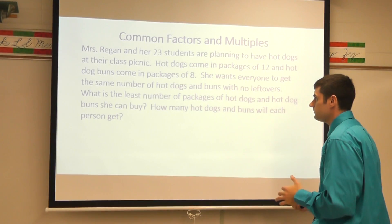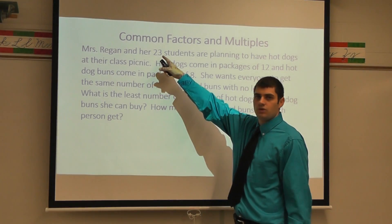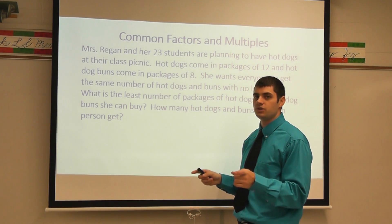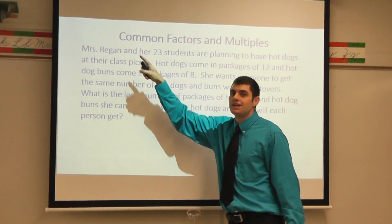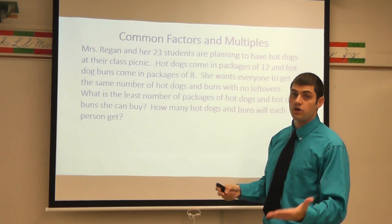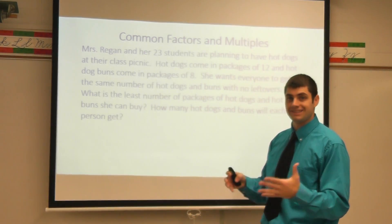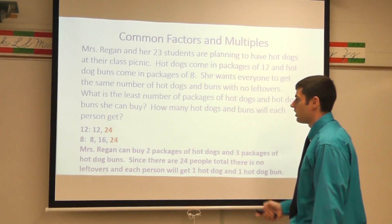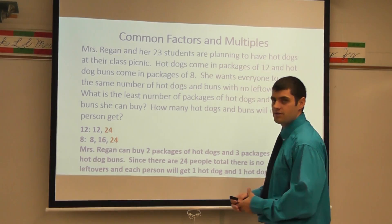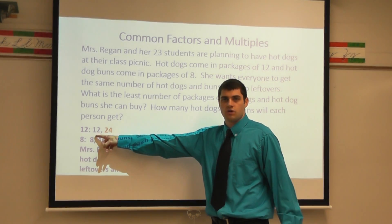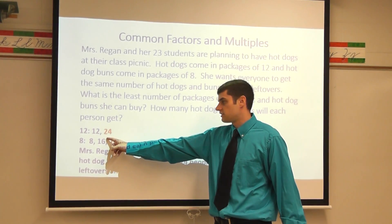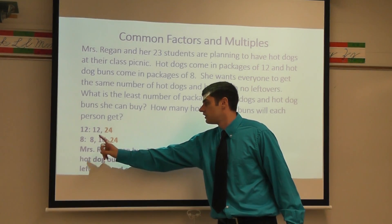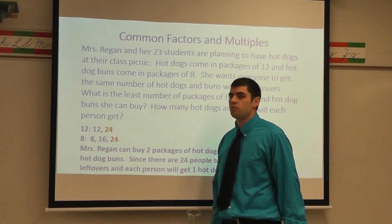One tricky thing: you might think 23 students is the total, but don't forget to add in Mrs. Regan. So there are really 24 people total at this class picnic — don't leave her out, she needs lunch too! We can use common multiples. If I buy one package of hot dogs it's 12, two packages is 24. For hot dog buns: one package is 8, two packages is 16, three packages is 24.